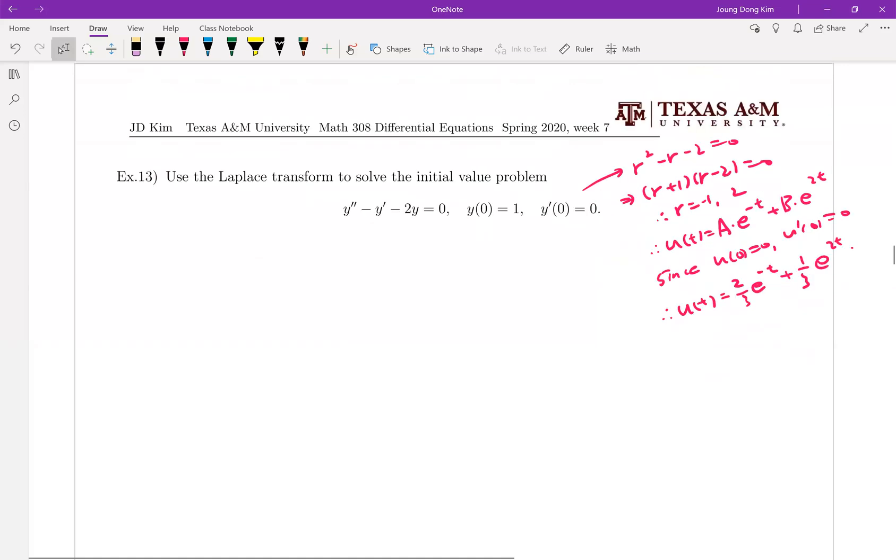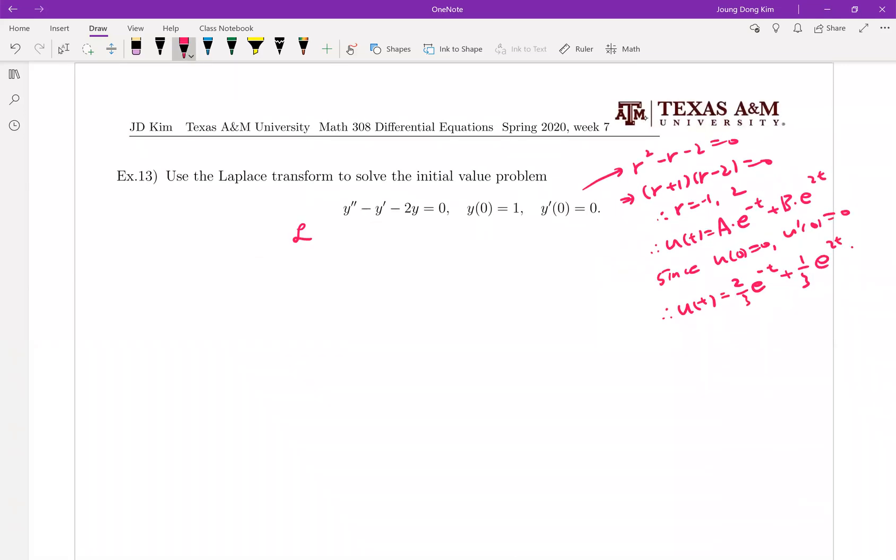Let me apply the Laplace transform first on both sides. Apply Laplace transform. Then you're going to have Laplace transform of y double prime minus y prime minus 2y equal to Laplace transform of 0 equals 0. And since it's linear we can write this left hand side with three separated Laplace transforms.